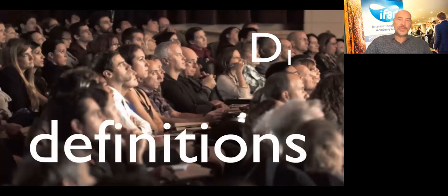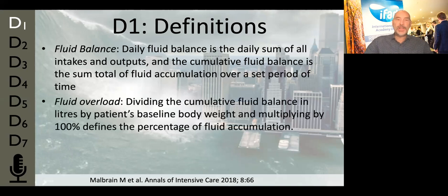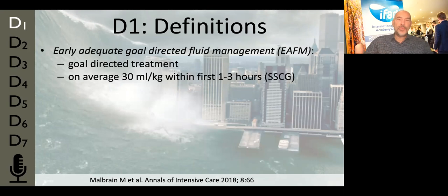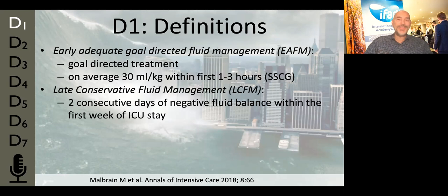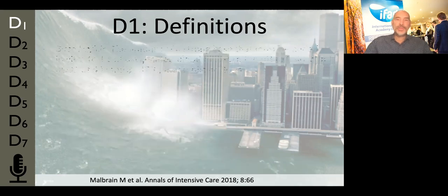D1 is on definitions. You're all aware of fluid balance and fluid overload. For that, you need to divide the cumulative fluid balance in liters by the patient's baseline body weight, defined as a cutoff value of 10% fluid accumulation. We have early adequate goal-directed fluid management, like in surviving sepsis campaign guidelines, late conservative fluid management, and late goal-directed fluid removal — the hot item we refer to as de-resuscitation.